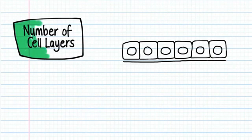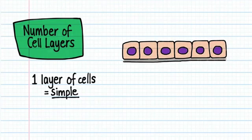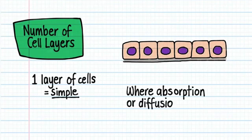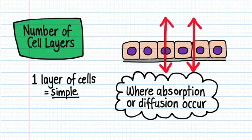Let's look at the number of cell layers first. If only one layer of cells is present, we call the epithelium simple. Simple epithelium is found where rapid absorption or diffusion occurs, because material can pass really quickly through just one layer of cells.